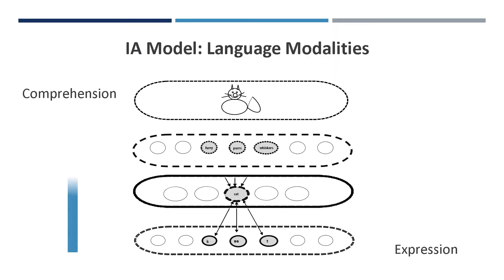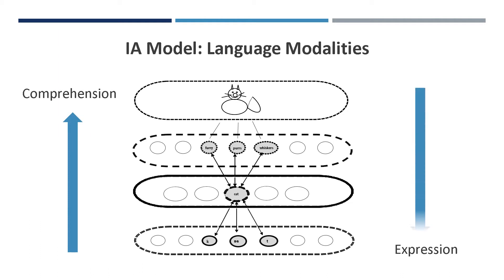This depiction of the IA model demonstrates the steps involved in both language input and output. For the auditory comprehension of language, it shows how spoken words are processed in order to understand an idea. And when you reverse these steps, it demonstrates the verbal expression of language, moving from an idea to the spoken word.